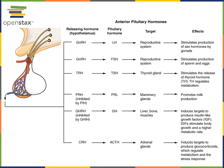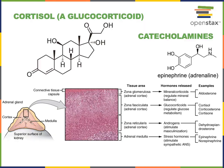ACTH stimulates the production of glucocorticoids, and the primary glucocorticoid is cortisol — a long-term stress response hormone that functions to increase blood glucose levels, hence the name glucocorticoid. In the top left we can see the chemical structure of cortisol, the major glucocorticoid in humans, which is a steroid hormone produced from cholesterol. On the top right is the chemical structure of epinephrine, also known as adrenaline, the major catecholamine hormone produced by the adrenal medulla.